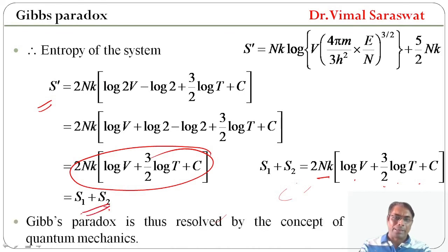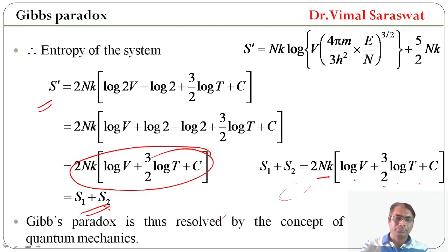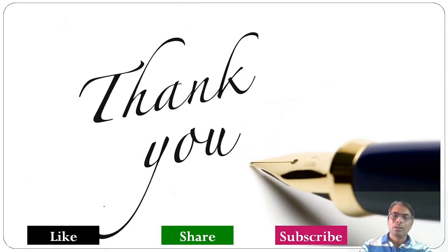Gibbs Paradox is resolved by the concept of quantum mechanics. If we use the classical concept, the Gibbs Paradox arises in the entropy of the system. If we use the concept of quantum mechanics, the Gibbs Paradox is resolved. Here we end our session. In today's session of Statistical Mechanics, we have discussed about Gibbs Paradox. Goodbye.